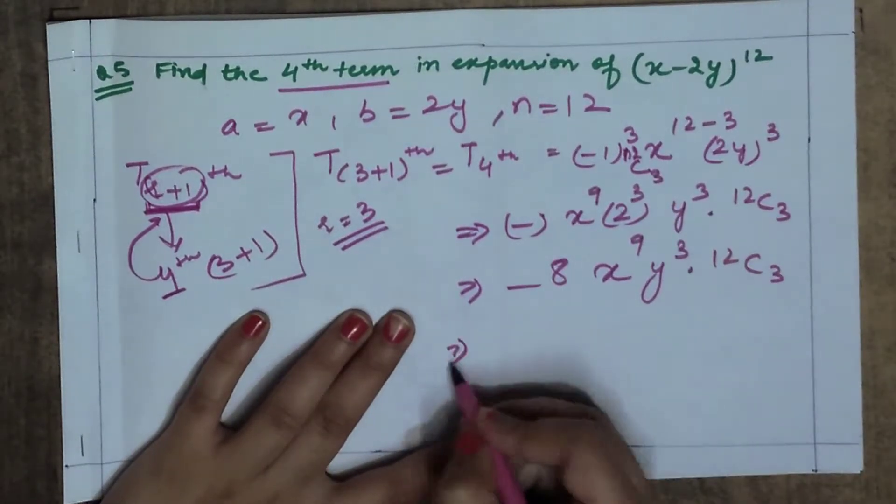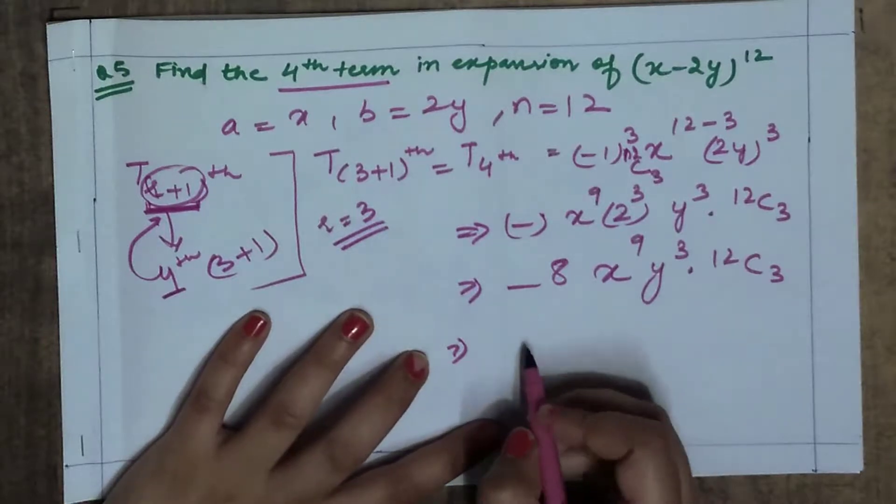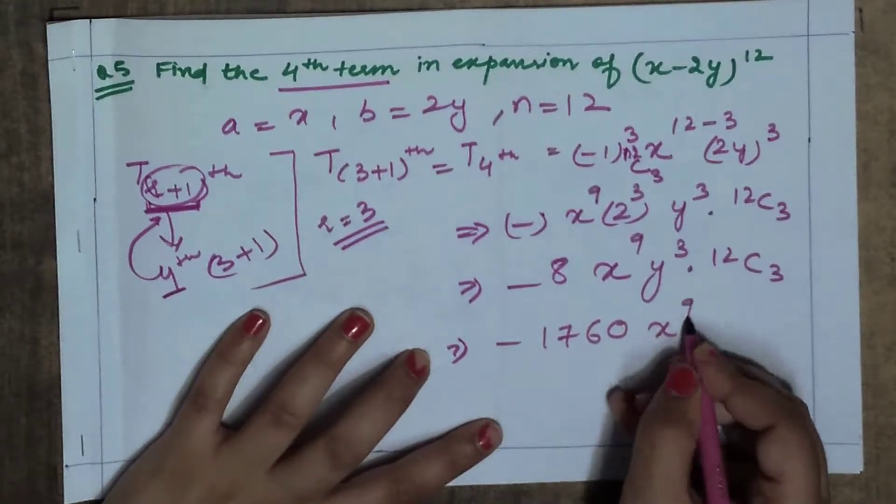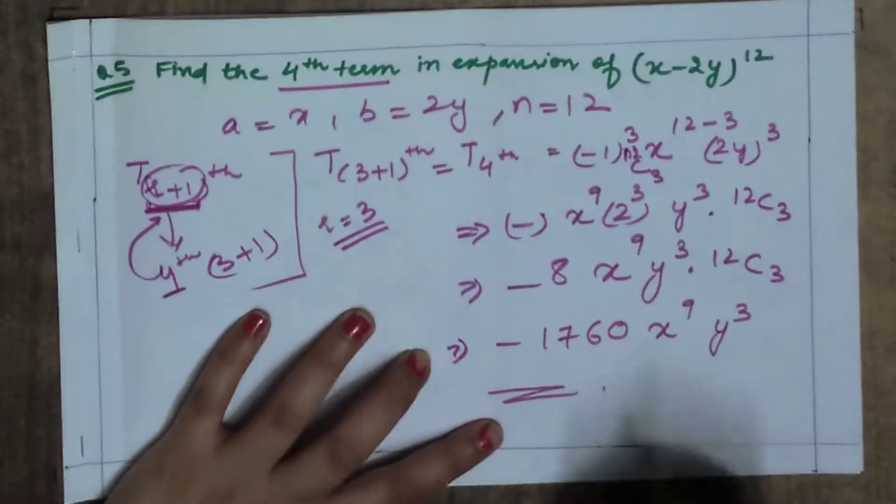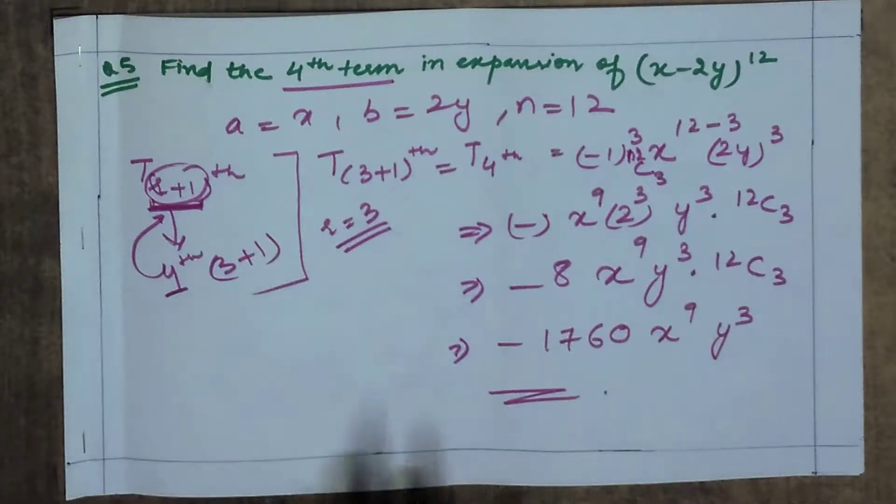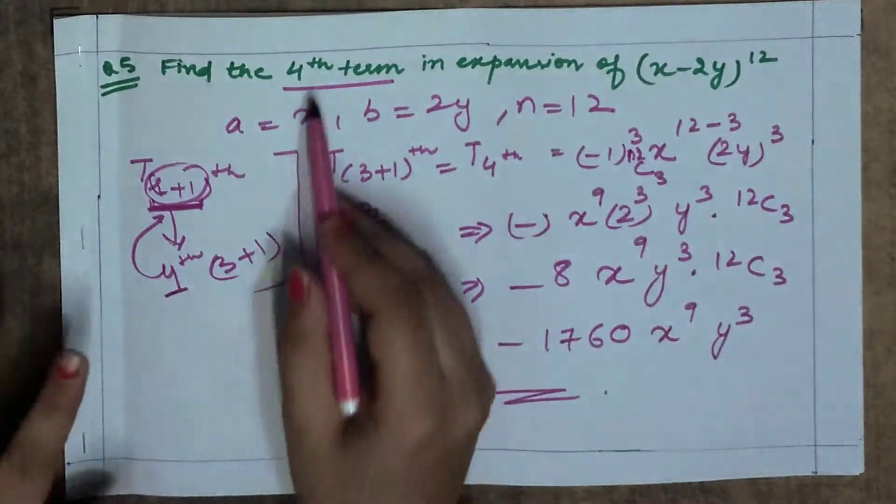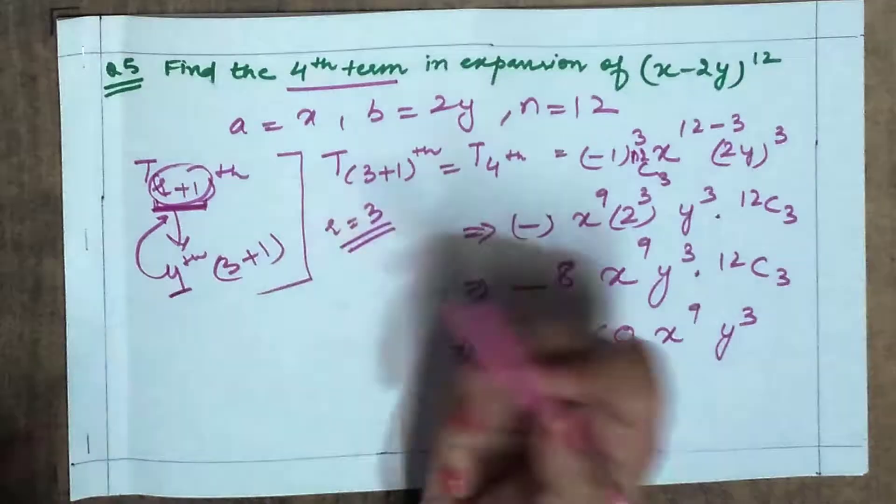12C3. Now when you solve it, the value is minus 1760 x to the power 9, y to the power 3. So this is your solution. You don't have to do anything, you just give it directly how the value is, and you will find out the term.